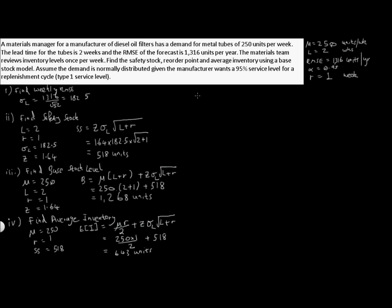Okay, so graphically, once again let's see all our key attributes. We have on the y-axis inventory units, time is on the x-axis. So our top value we calculated is our B, base stock level. We calculated this out to be 1268 units.